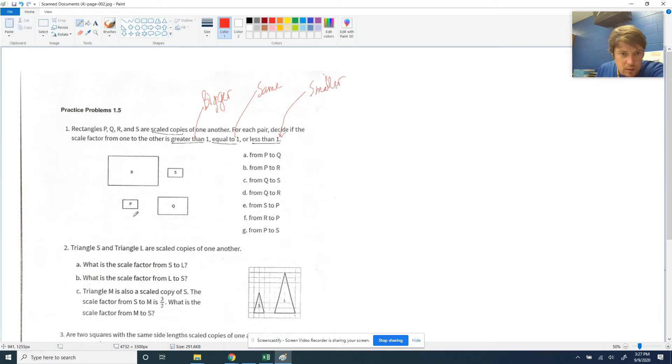P to Q. So if I go from here to here, it got bigger, so that is going to be a greater than 1 type situation. All right, let's do another one. P to R. Once again, got bigger, so greater than 1. Next one is Q to S. This one got smaller, so that has a scale factor less than 1.